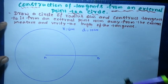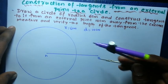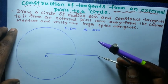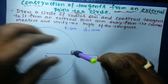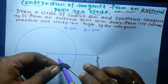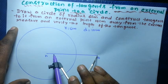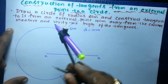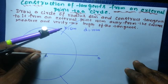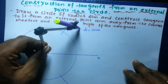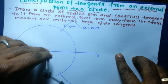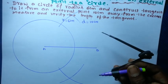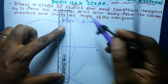Now draw the perpendicular bisector for the AB line. To draw the perpendicular bisector, take more than half of AB in the compass and cut arcs on either side of the line — first placing the compass at A, then at B. Then join the two points where the arcs intersect.